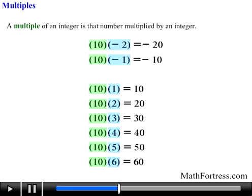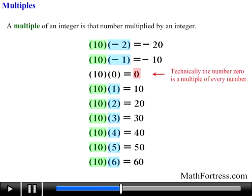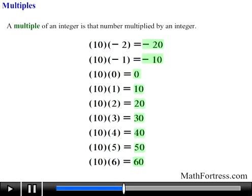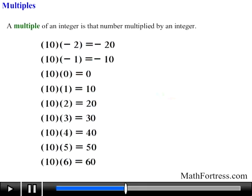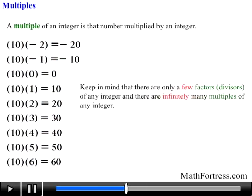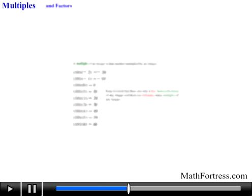Also keep in mind that technically the number 0 is a multiple of every number, since 0 times 10 gives you 0, and 0 times negative 10 also gives you 0. In general, a multiple is divisible by each of its divisors without leaving a remainder. Also keep in mind that there are only a few factors of an integer but there are infinitely many multiples of an integer.